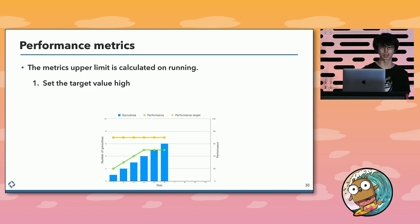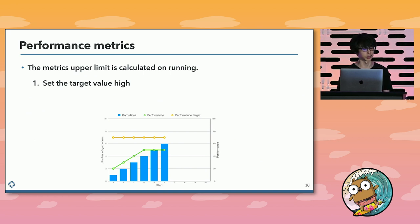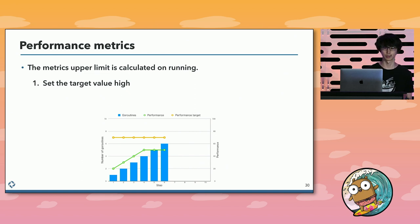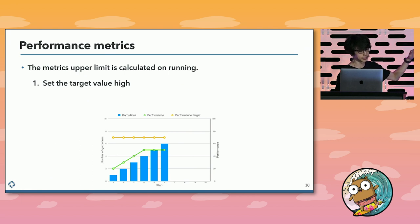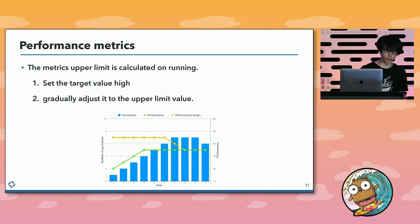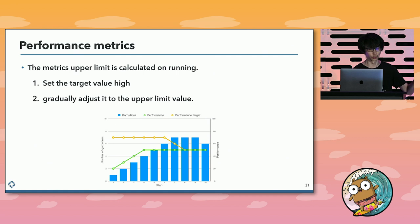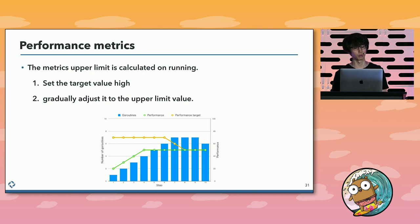But the performance upper limit is different for each application. In other words, we don't know the actual value of the target, so it is calculated at runtime. At first, it sets the target value high and increases the number of goroutines to meet the performance target. If it doesn't meet the performance target, it regards that point as the metric's upper limit. After that, it gradually adjusts to the new upper limit value. The summary: the proposed method uses CPU usage upper limit as the performance target, and the value is calculated at runtime.